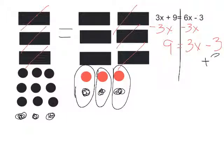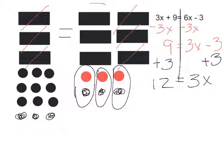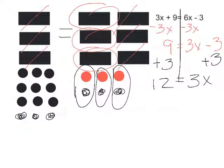I added 3 positives to the right and 3 positives to the left. So that leaves me with 12 on the left and 3x's on the right. My last step is to divide — I'm going to divide into 3 equal parts. So 3x's into 3 parts, and I divide 12 into 3 parts.